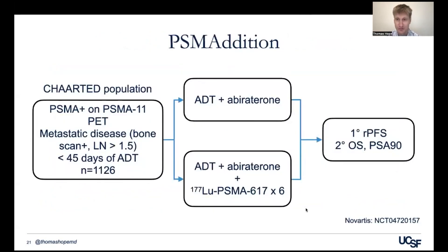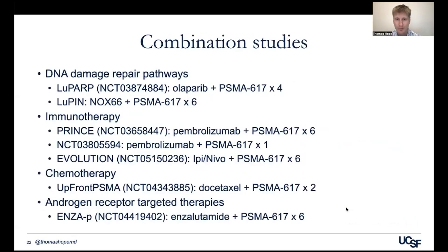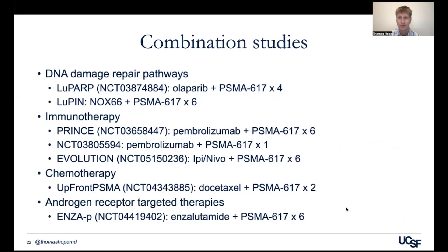There's also the PSMAddition trial, taking patients with metastatic castration-sensitive cancer at presentation and randomizing them to ADT plus abiraterone, or ADT plus abiraterone plus lutetium PSMA-617 — moving it up into the upfront castration-sensitive setting. There are also combination studies: DNA repair pathway inhibition with PARP inhibitors like the LuPARP trial, immunotherapy trials combining pembrolizumab or ipilimumab with PSMA-617, chemotherapy trials using a dose of taxol plus PSMA-617, and the ENZOP trial combining enzalutamide and PSMA-617.